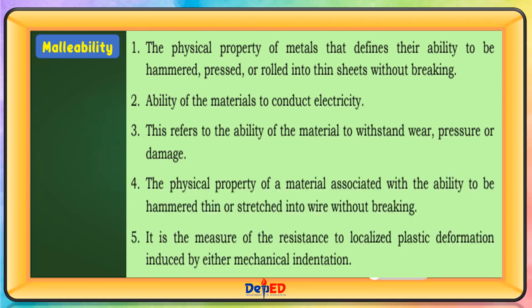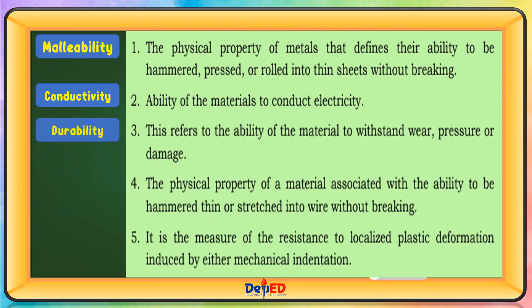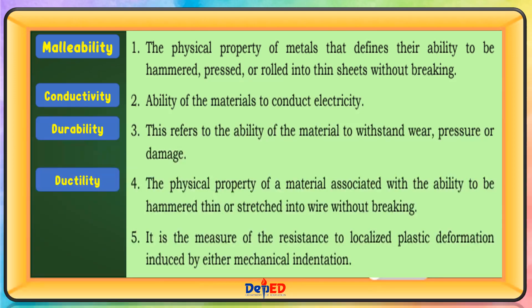This refers to the ability of materials to withstand wear, pressure, or damage. The physical property of a material associated with the ability to be hammered thin or stretched into wire without breaking is called Ductility. And it is the measure of the resistance to localized plastic deformation induced by mechanical indentation — this is Hardness.